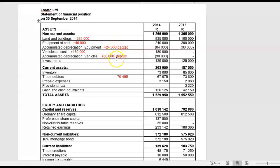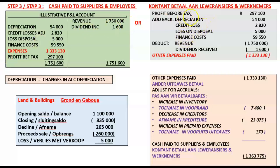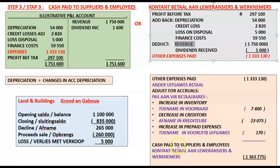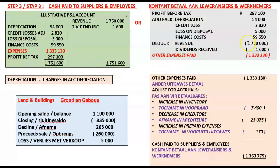So our total depreciation charge is then 54,000. Let's add that back to our profit before tax: depreciation 54,000. You could have gone via the T account starting with profit before tax on the debit side 297,100, then depreciation, credit losses adjustment, and loss on disposal of land. We have to take out revenue — why? Because we're working with expenses and we've already used revenue when we worked with cash received from customers. So our total revenue for the year was 1,750,000 and we must take that one out.